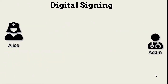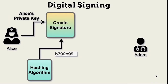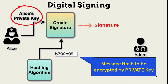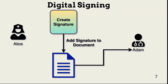Message integrity and digital signing are related, and they help to validate message content and the identity of the sender. Alice runs the message through a hashing algorithm to create what's called a message digest. To create a digital signature and protect the message hash, Alice uses her private key to encrypt the message digest. The encrypted digest is the digital signature. The signature is added to the document, and the document is sent to Adam.